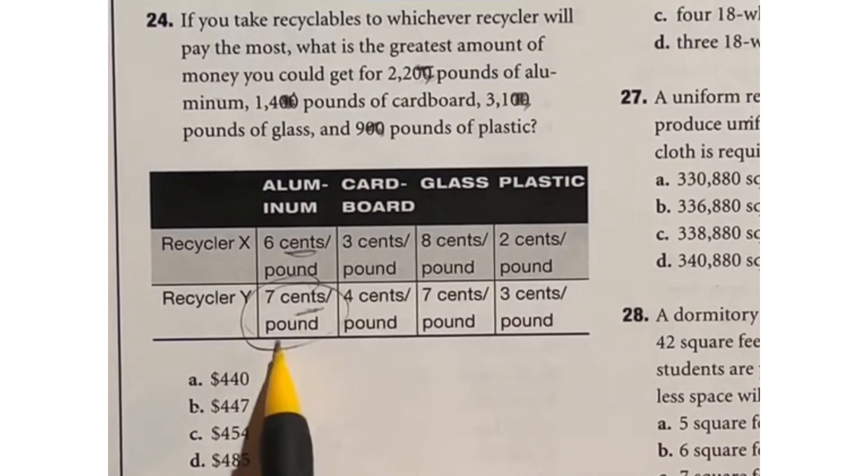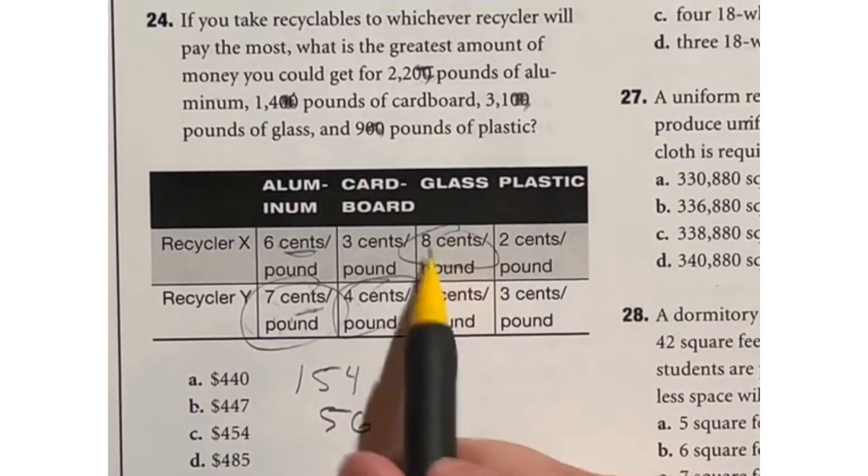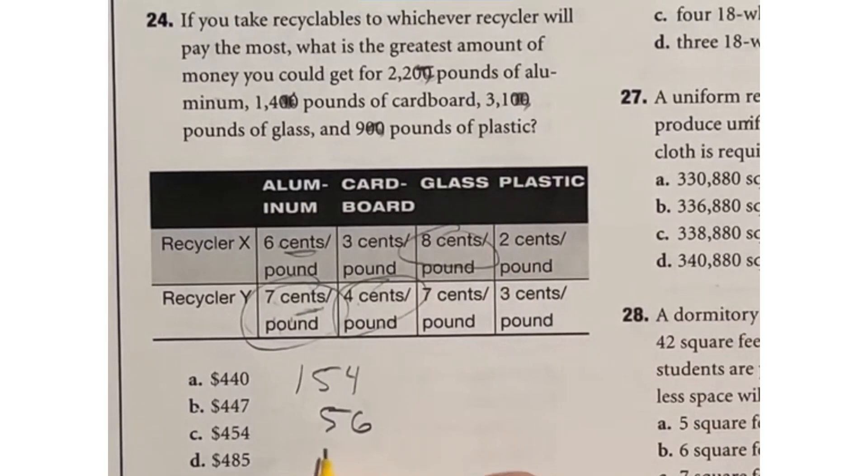So let's go through first one would be this 7 because that's higher than the 6. So 7 times 22 is going to give me 154. Then 4 is higher for this one so 4 times the 14 is going to give me 56. Then we have the 8 is higher here so 8 times that 31 is going to give me 248. And last but not least this 3 here 3 times the 9 is going to give me 27. If we add all of these up we end up getting 485 which is answer D.